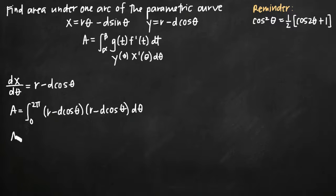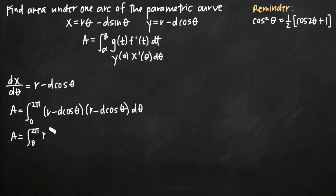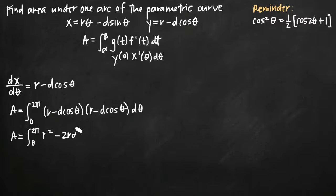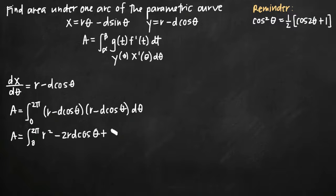Now we just need to simplify the integral. We'll expand and FOIL out what we've got inside: we get r squared, minus rd cosine theta minus rd cosine theta which gives minus 2rd cosine theta, and then negative d cosine theta times negative d cosine theta gives us a positive d squared cosine squared of theta, all times d theta.